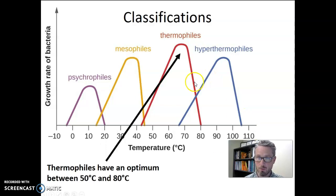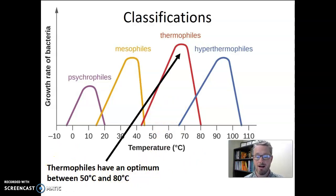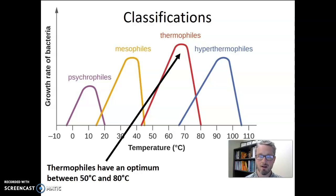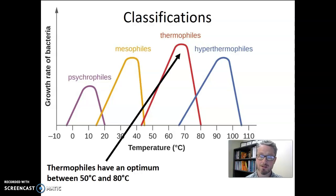Going the other way, we have the thermophiles. Thermophiles have an optimum temperature between 50 and 80 degrees Celsius — they love that warm temperature. For a microbiology class focusing on human health, thermophiles also don't represent human pathogens because our body is not hot enough to support their growth. However, thermophiles are very interesting microorganisms; we can develop useful tools from their biological molecules, making them super important and interesting, even though they're unlikely to make a person sick.